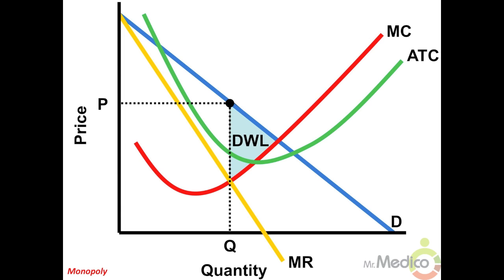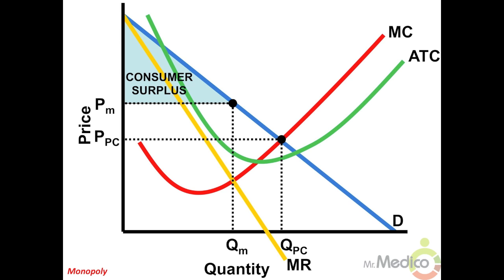Because of the higher monopoly price, the area of consumer surplus is less than a perfectly competitive market's consumer surplus. Part of the original consumer surplus under a perfectly competitive market will be transferred to the producer; the rest becomes part of the deadweight loss.